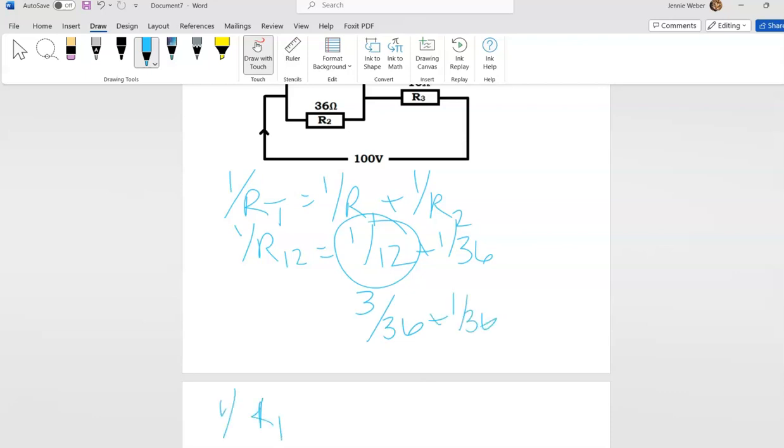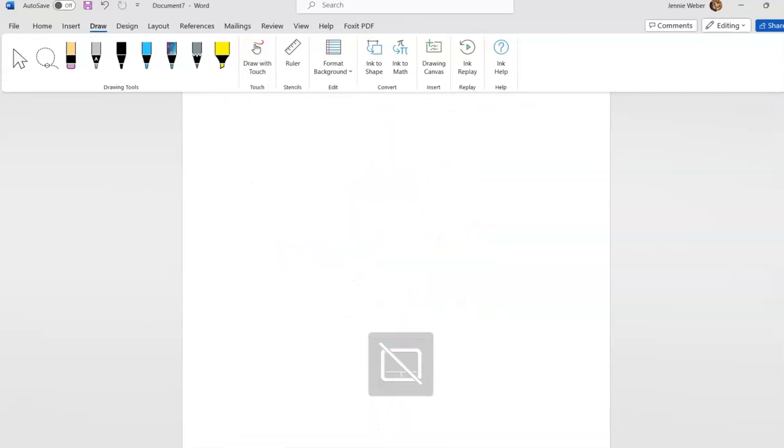So 1 over R of 1T equals 4/36. I knew it was going to do that, putting it off but I knew it was going to do that.